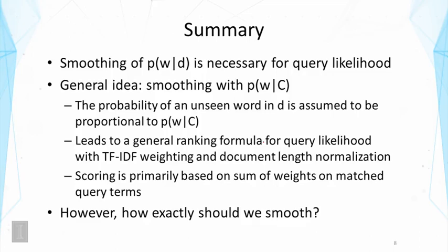With this assumption, we've shown that we can derive a general ranking formula for query likelihood that has the effect of TF-IDF weighting and document length normalization. We also see that, through some rewriting, the scoring of such a ranking function is primarily based on the sum of weights on matched query terms, just like in the vector space model. But the actual ranking function is given to us automatically by the probability rules and the assumptions that we have made, unlike in the vector space model where we have to heuristically think about the form of the function.